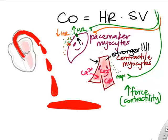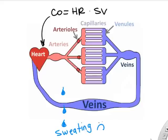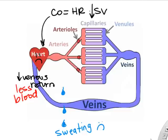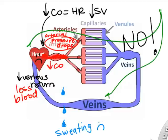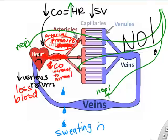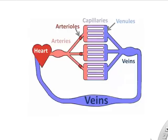An example of cardiac output regulation: if you become severely dehydrated, you lose blood volume, which decreases venous return, decreases stroke volume, and reduces cardiac output, causing blood pressure to drop. Through homeostasis, the autonomic nervous system compensates by increasing heart rate, bringing cardiac output back toward normal even though stroke volume is reduced.